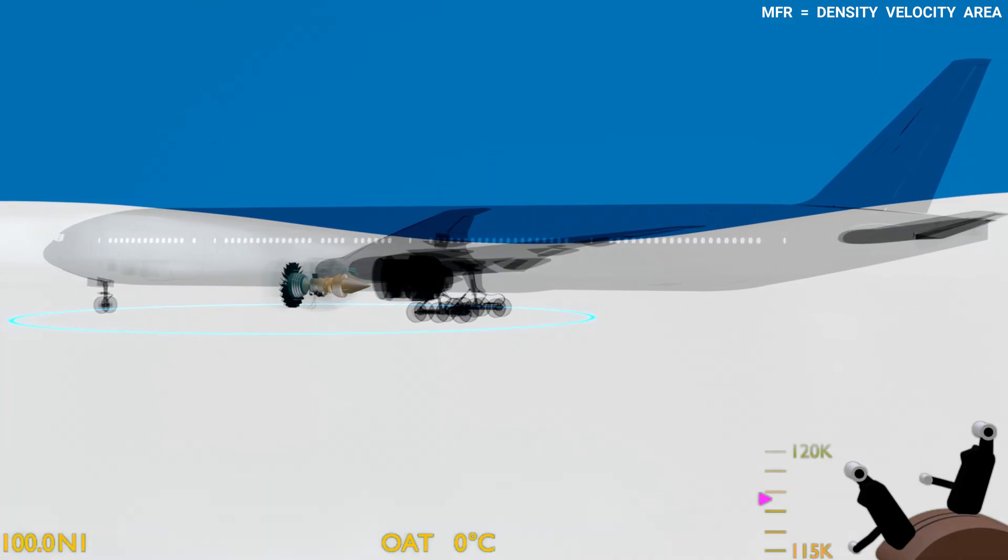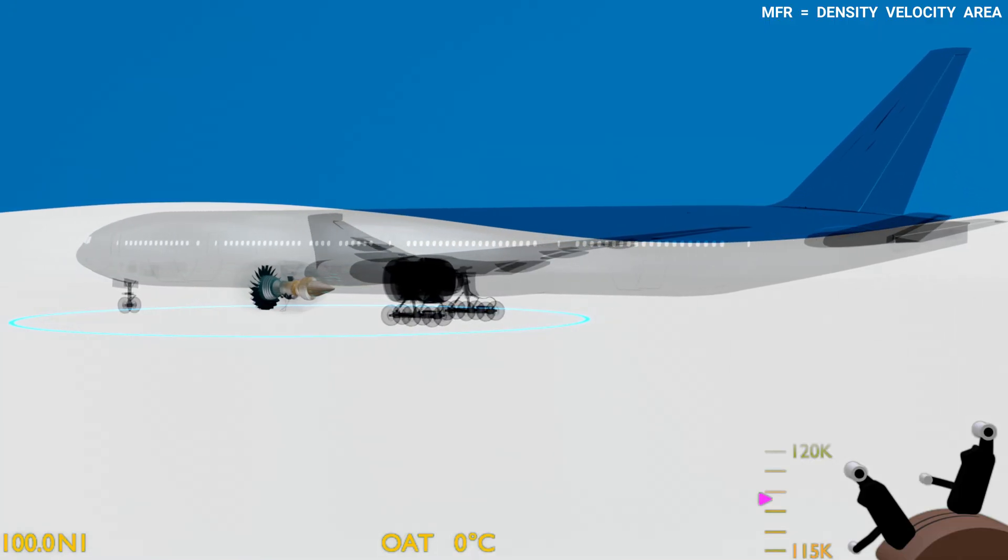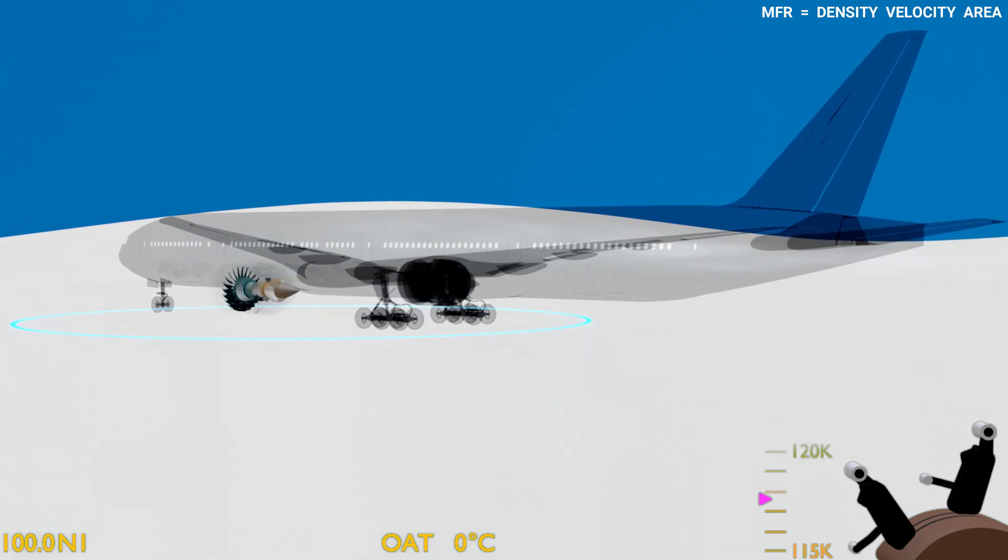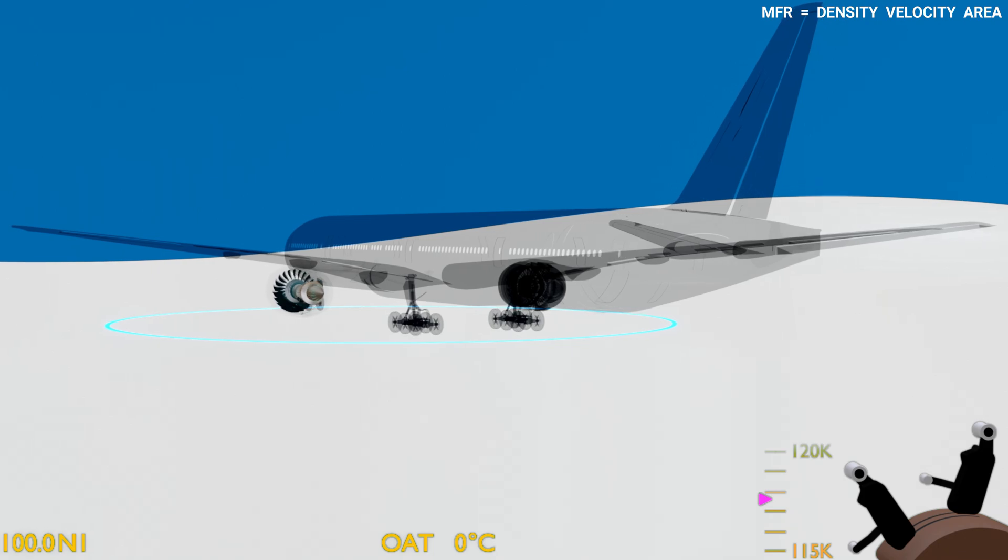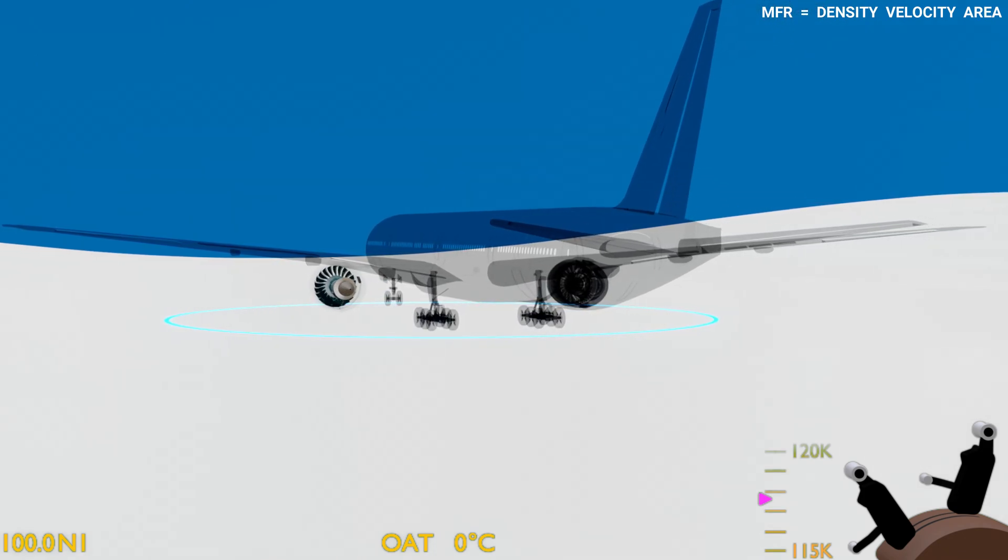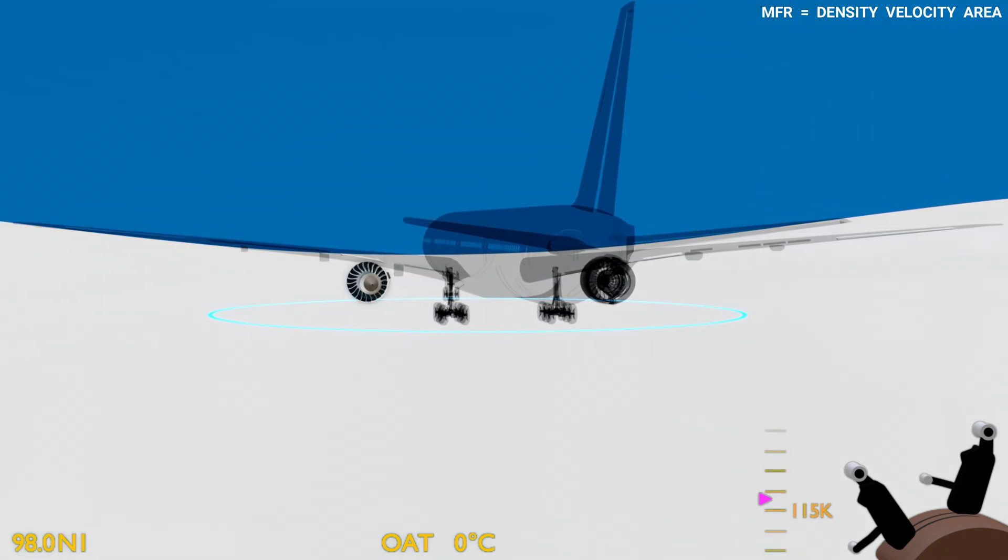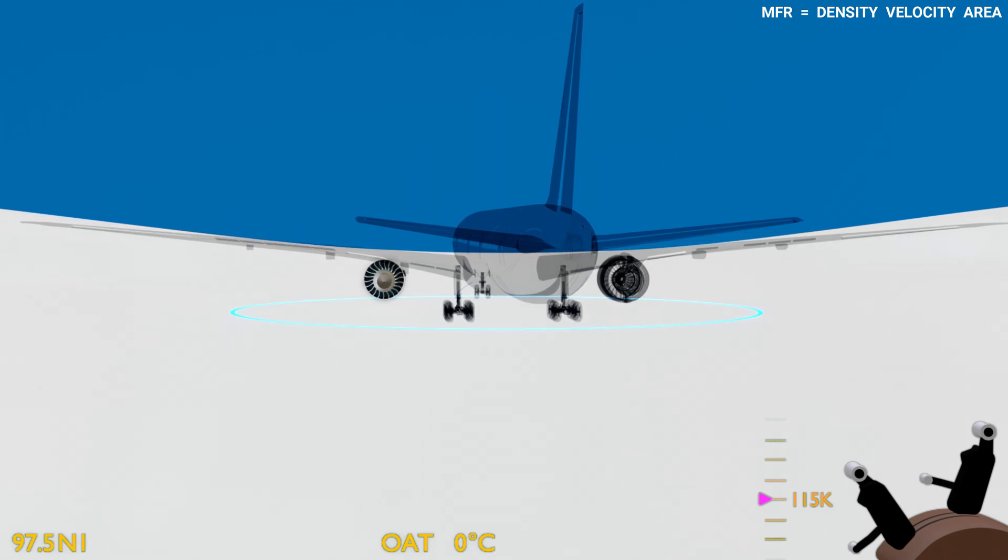In a low atmospheric temperature condition, the air density is relatively higher. If the engine runs at the standard speed, then the thrust produced will exceed beyond the rated thrust. Therefore the EEC limits the N1 speed to reduce the airflow and ensures the engine maintains the rated thrust.